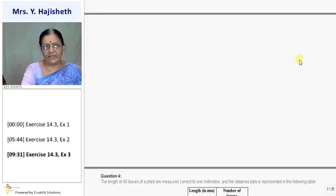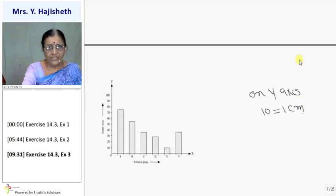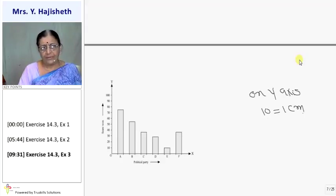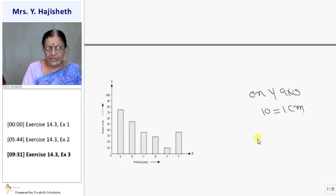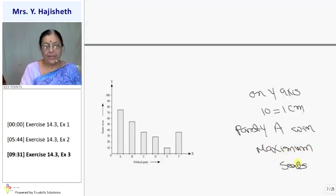Distance between two bars also we should keep constant. Okay, so are you getting? And this question they have asked is which political party get highest number of seats? So answer is political party, party A won maximum seats. Okay. Clear.